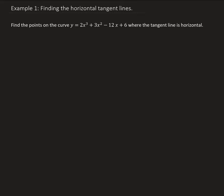Let's look at the parabola as an example. We have a horizontal tangent line that would occur here at the vertex. What you do is take the derivative of this curve — of this function — and then set it equal to zero, and that way you can locate where this occurs.